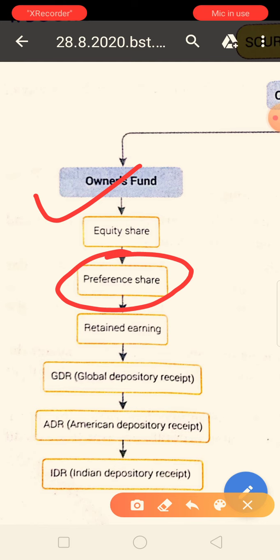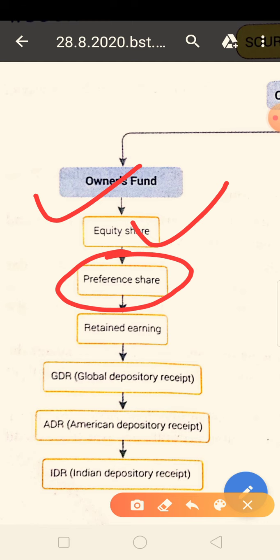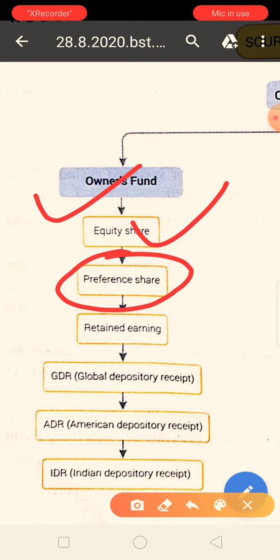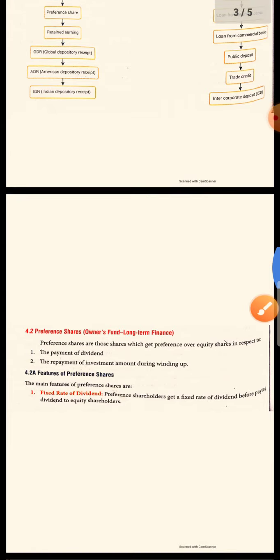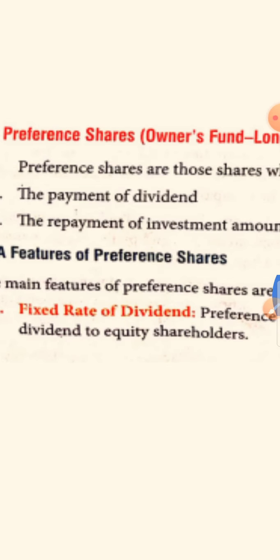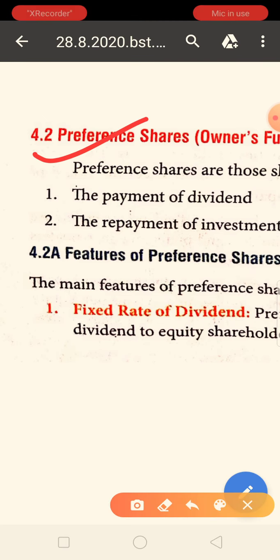Preference shareholders are not the main owners of a company. Equity shareholders are the main owners of a company. As discussed in the previous lecture, equity shareholders are the main owners and preference shareholders are not. Today we will start with preference shares under owners' fund.